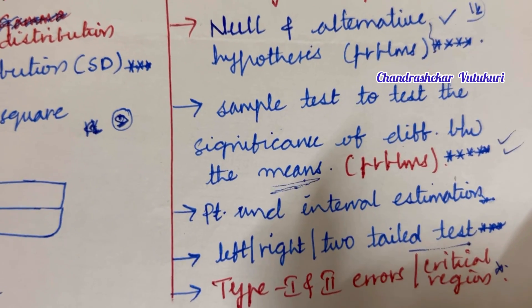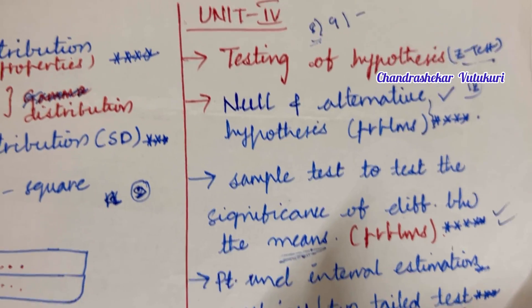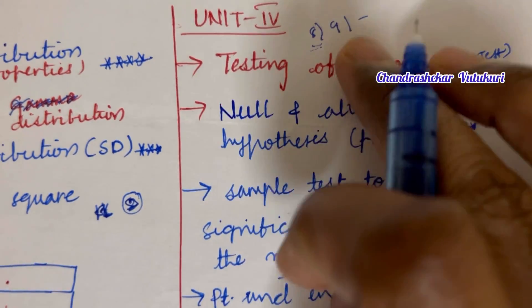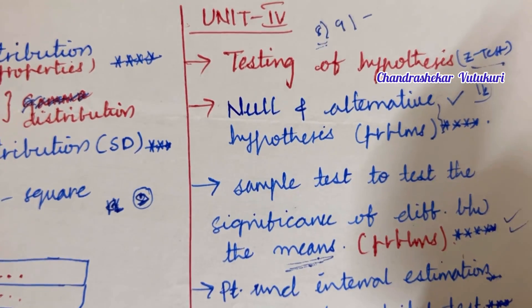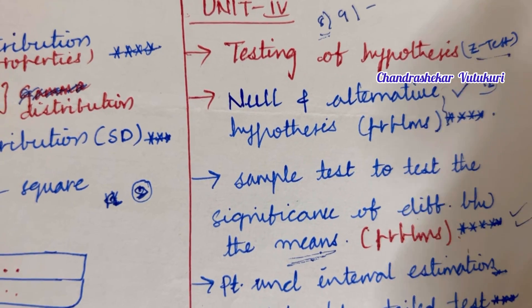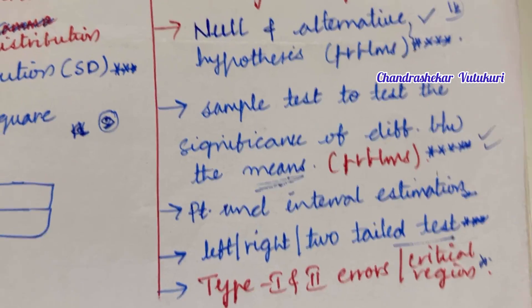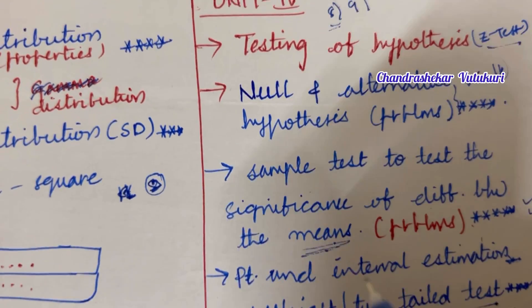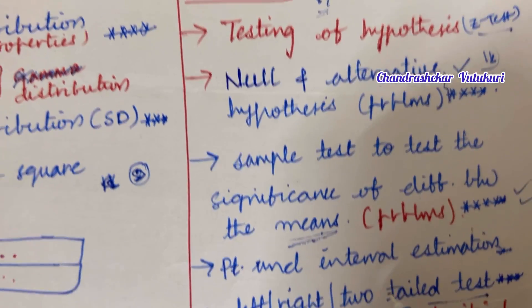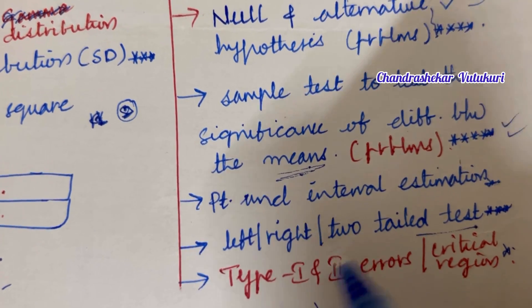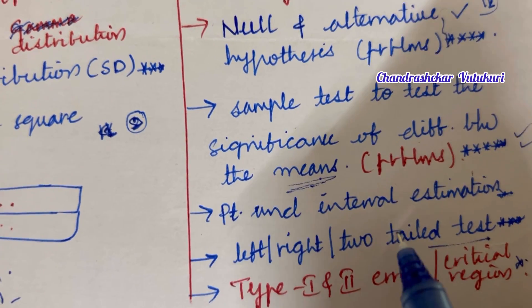These questions will be covered from Unit 4 — the 8th and 9th questions. Sometimes there may be only a 10-mark question, and sometimes it is a 5-5 split, with 2-mark short questions also being covered from these two questions.